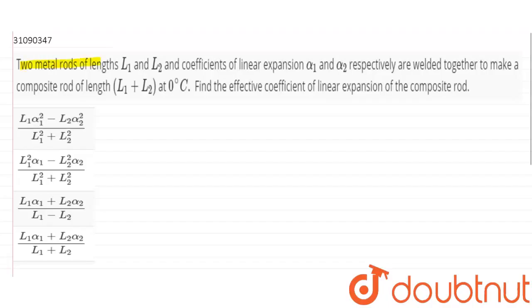The question is: Two metal rods of length L1 and L2 and coefficient of linear expansion alpha 1 and alpha 2 respectively are welded together to make a composite rod of length L1 plus L2 at 0 degree Celsius. Find the effective coefficient of linear expansion of the composite rod.